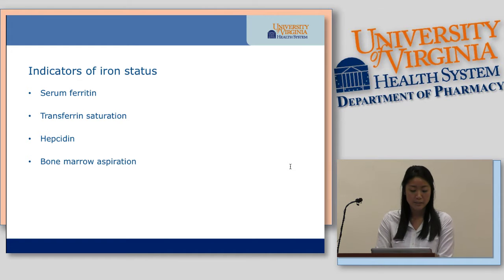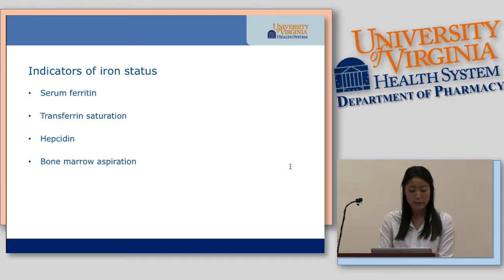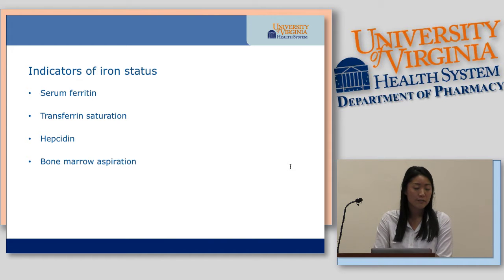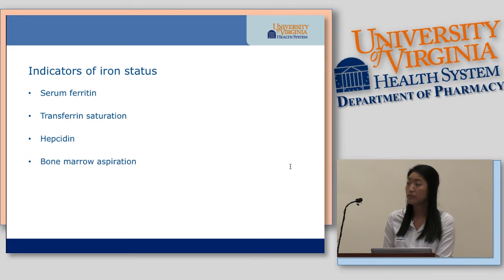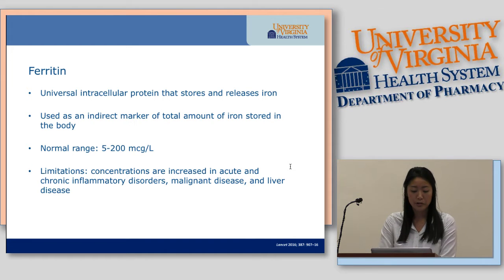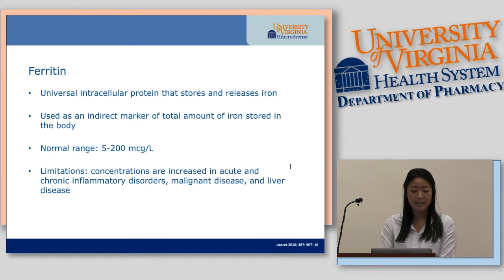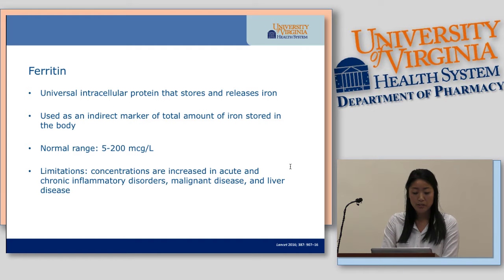Looking at indicators of iron status, you can look at serum ferritin, transferrin saturation, hepcidin, and bone marrow aspiration. Bone marrow aspiration is the gold standard for looking at iron stores — it's not affected by inflammation and is highly specific — but it's invasive and expensive, so we don't really use it. We rely more on serum ferritin. Ferritin is a universal intracellular protein that stores and releases iron, and it's important because free iron acts as a catalyst in the formation of free radicals and can be toxic in excess. Ferritin is used as an indirect marker of the total amount of iron stored in the body.